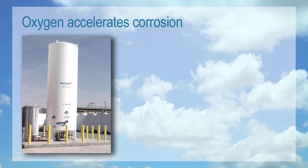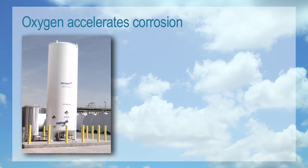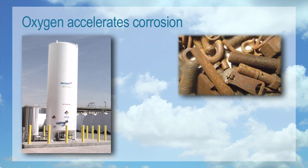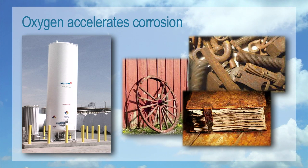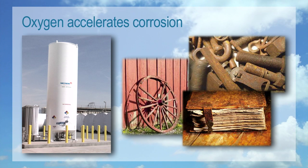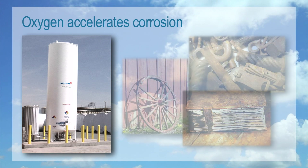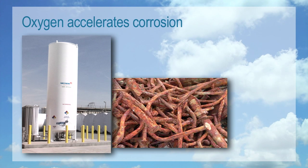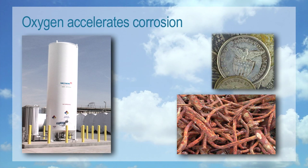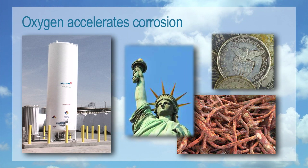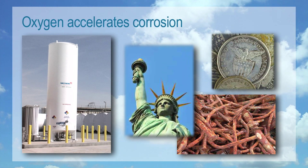Oxygen accelerates corrosion. Most metals, wood, paper, and even many synthetics all break down from prolonged exposure. Oxygen causes rust on iron, a blackish film on silver, and a distinctive green corrosion on copper.